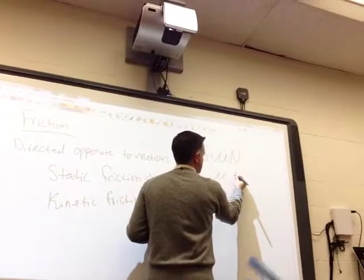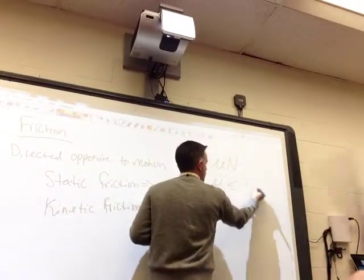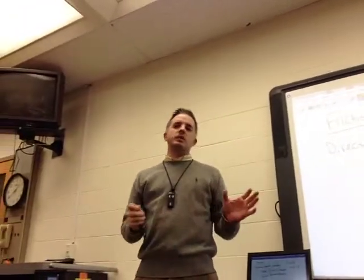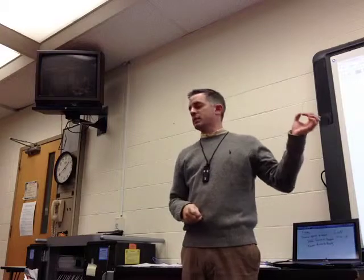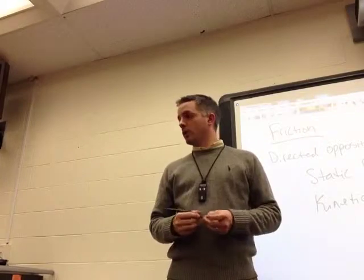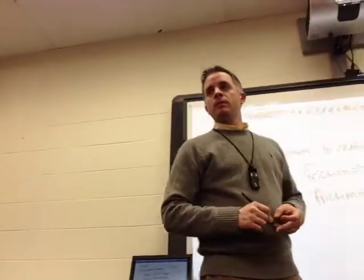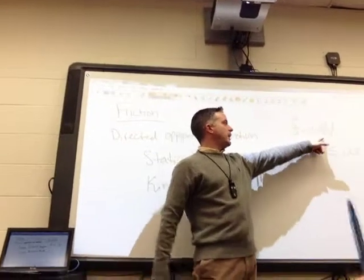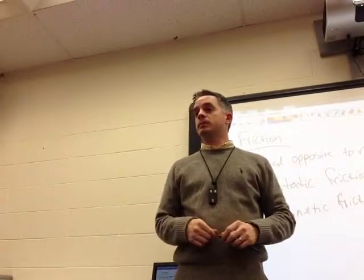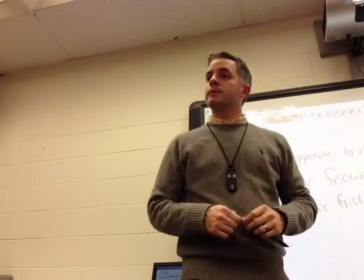Mu is typically less than or equal to one. So 99% of the time you'll see mu as a decimal less than one. There are maybe two or three rare instances in the world where you have a coefficient of friction greater than one, depending on the materials. If mu were greater than one, it would mean that friction is greater than the normal force — it would just increase the friction and make something stop faster.